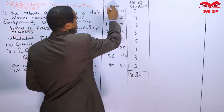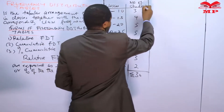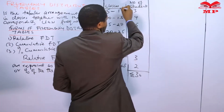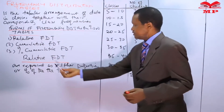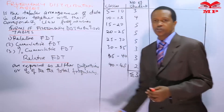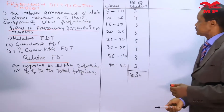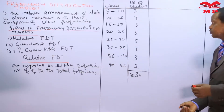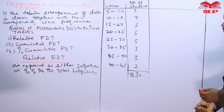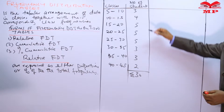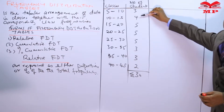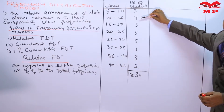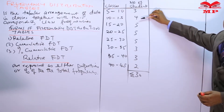Under the relative frequency distribution table, we are saying that the frequencies are expressed as percentage values.